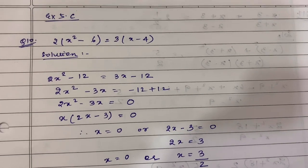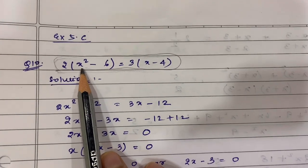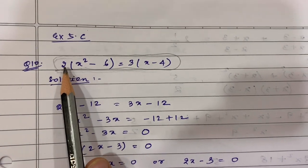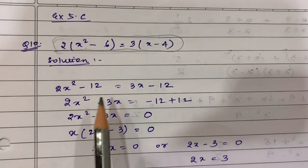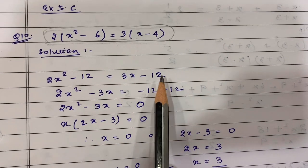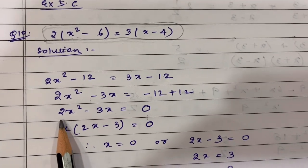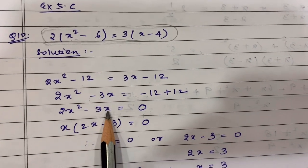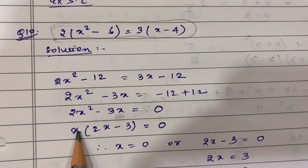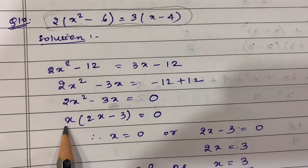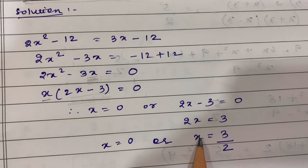Let's begin with the first question — a quadratic equation where we need to find the solution for x. I open the brackets by multiplying, and get 2x² - 3x = 0. Here we only have two terms, so we take x as common outside the bracket to get x(2x - 3) = 0. This gives two solutions: x = 0 and x = 3/2.